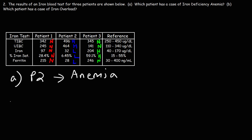Now what about B, which patient has a case of iron overload? Well we can clearly see that patient 3 has a case of iron overload. The serum iron levels and the iron saturation are very high, even though the TIBC levels are normal.